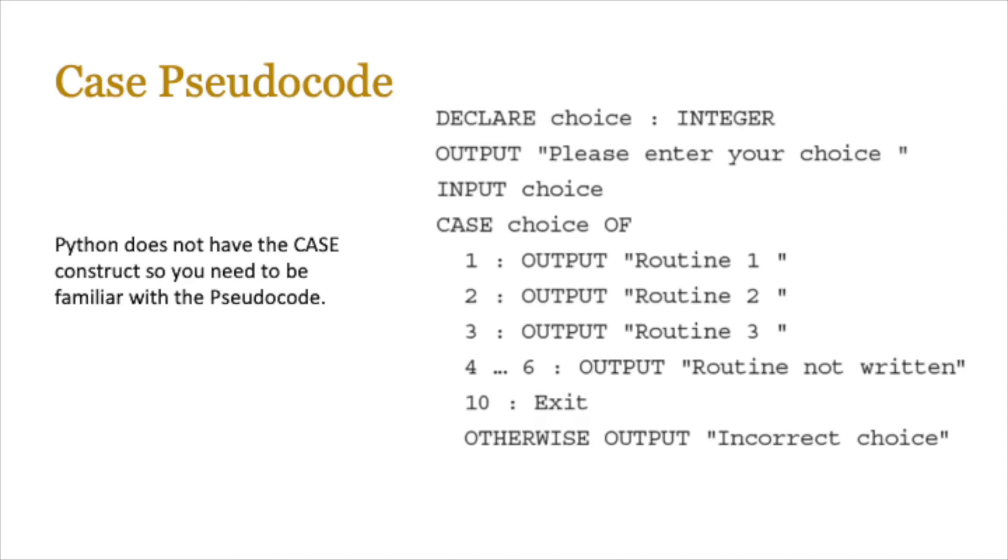So case statements in pseudocode are normally written in the form of capital case, choice of, choice is your variable, and then you simply say 1, 2, 3, 4, whatever the different cases are. So in the case of, in this case, the integer 1 outputs routine 1, the integer 2 entered will output routine 2, 3 will output routine 3, and 4 to 6 will output routine not written, 10 is your exit condition. Otherwise, which is kind of like your else statement, you output incorrect choice. So you're only allowed to enter 1, 2, or 10. You could do all of this with an if statement, but case allows you to branch multiple conditions together, and just gives you a different way of solving problem.